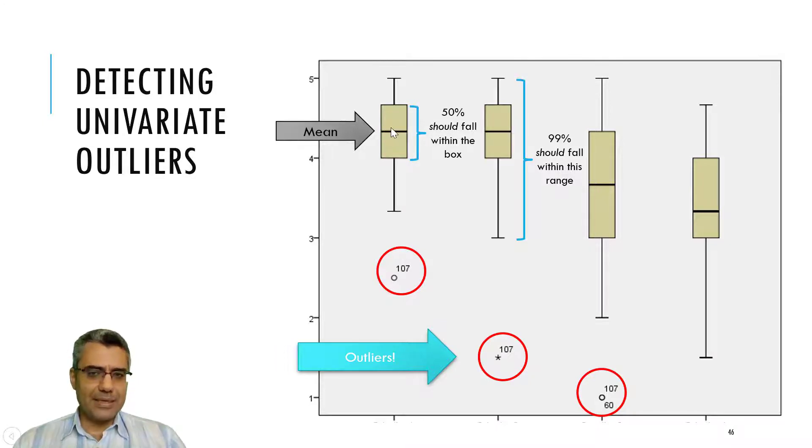This line shows the mean and 50% of cases should fall within these boxes. For example, here a bit for their responses should be between 4 to 5.5 or 4.6, and 99% of cases should fall within this range from the bottom to top. And those cases that fall outside of this range, they are potential outliers.